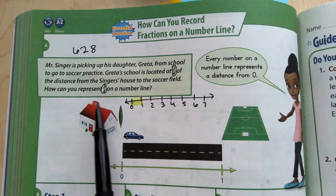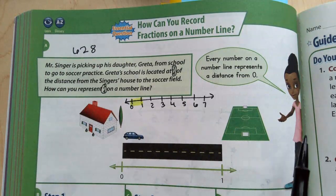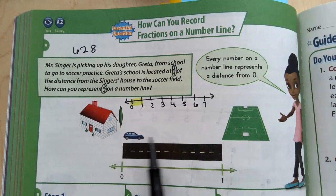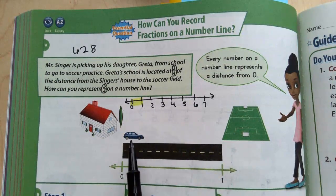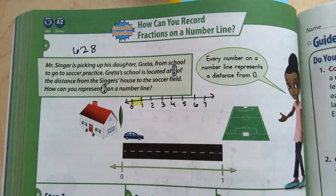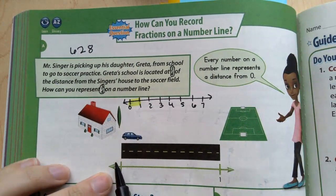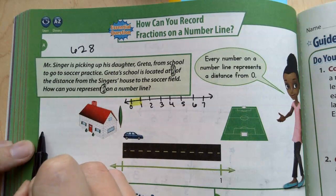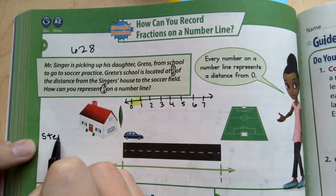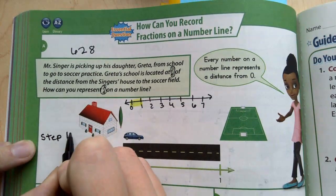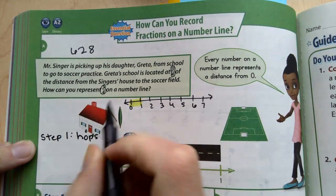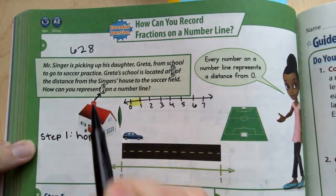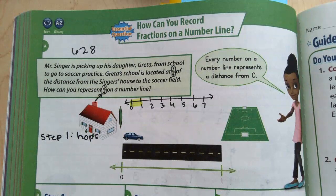So I see the house right here and the soccer field over here. And they're traveling across one, it looks like maybe one mile. So to start, and we'll write this out on this side, we are going to write our hops. And that is our whole.